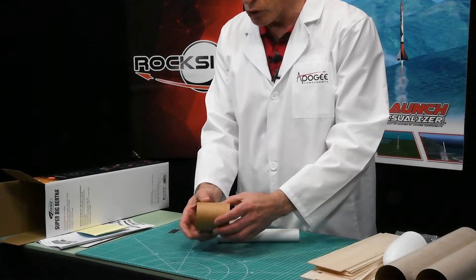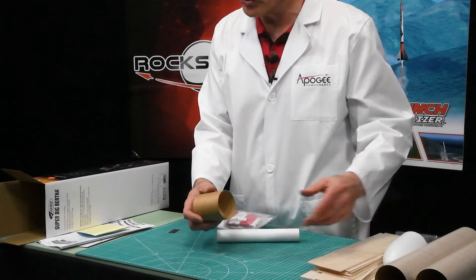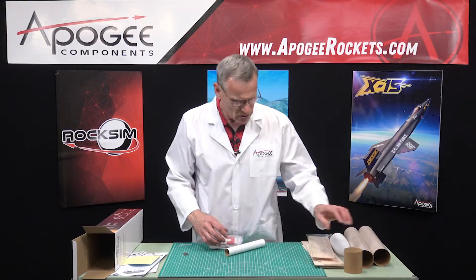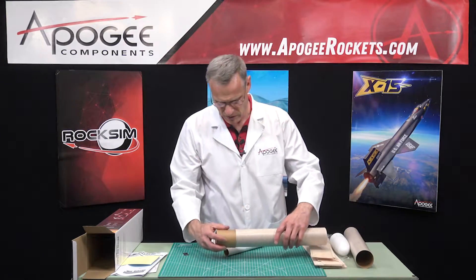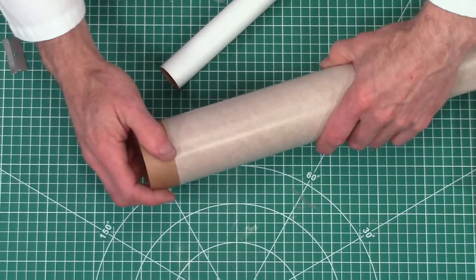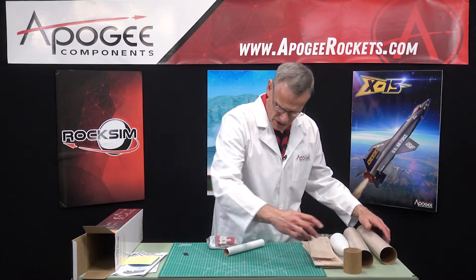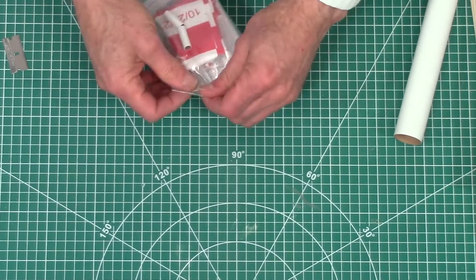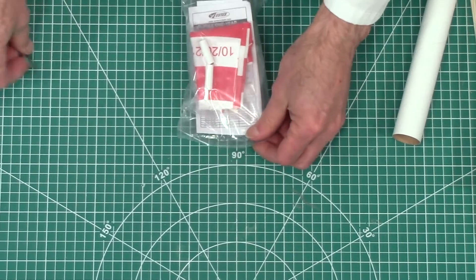We got a paper tube coupler, because we're going to join those two tubes together, make a longer tube. Let's check the fit on that. Oh yeah, that's a good fit too. So that's nice. And then in here, we got all of our smaller parts, so let's take a look at that.